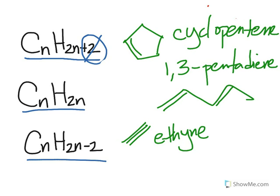And so on. So the formulas, the 2n plus 2, the 2n, and the 2n minus 2, help determine what levels of unsaturation are present in the hydrocarbon. And hopefully I've given you enough examples. And I'll see you again soon.